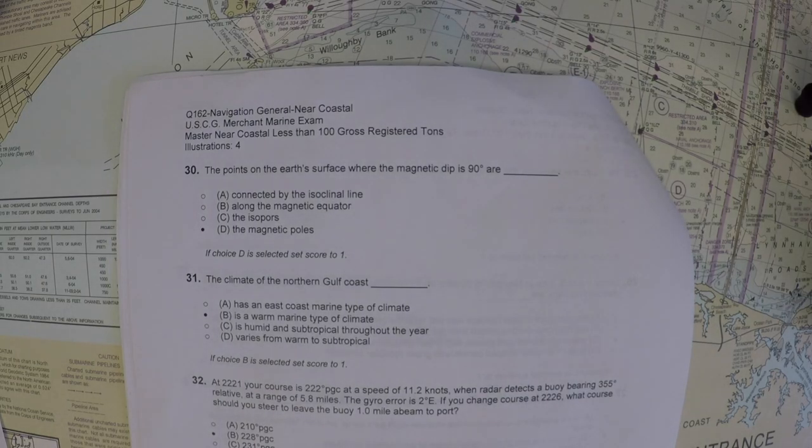Okay, the next problem is saying the points on the Earth's surface where the magnetic dip is 90 degrees are called what? Well, this one might be apparent to you right away if you know the definition of dip from celestial navigation.